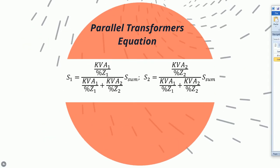In order to solve this problem, I recommend using the following equation, which can only be used when two transformers are arranged in parallel. This can work for differing kVA rated capacities and differing percent impedances, as is given in this problem. This equation states that the power flow through a certain transformer, whether Transformer 1 or Transformer 2, is proportional to the rated power of that transformer and inversely related to the percent impedance of the transformer.